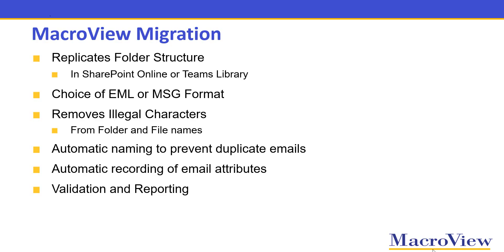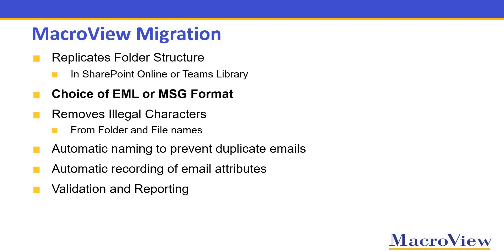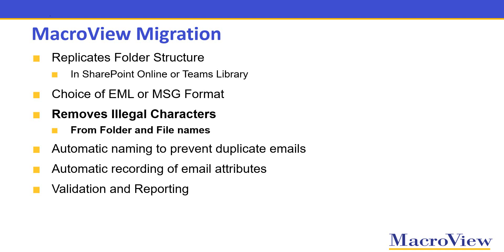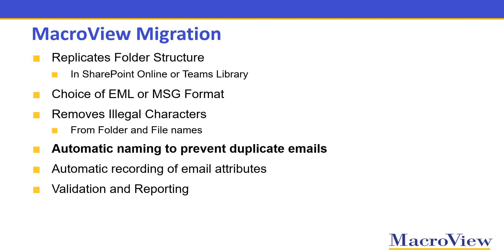Let's review what we've seen so far about MacroView Migration. Firstly, it replicates your existing public folder tree as a tree of folders in your SharePoint Online or Teams library. You have a choice of EML or MSG format for your migrated emails. The advantage of EML format is that it works on mobile devices. MacroView Migration removes characters that are illegal from the names of the migrated files and folders.